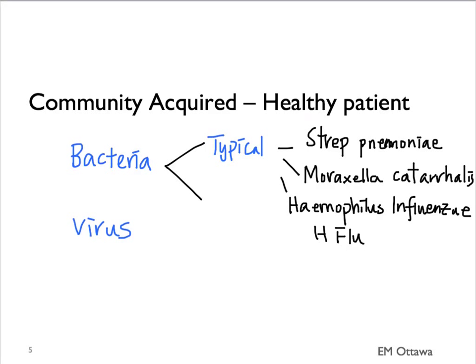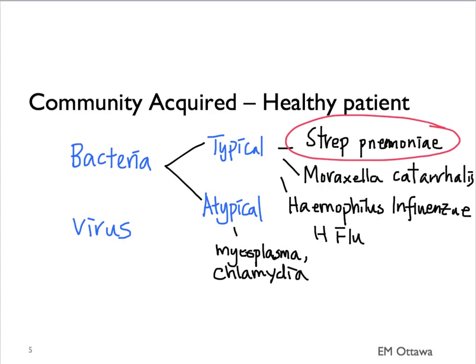Of the three typical bacteria, Strep pneumoniae is the most common cause of typical community-acquired pneumonia. In terms of atypical organisms, they can include Mycoplasma and Chlamydia. These organisms do not give the typical signs and symptoms of pneumonia. For viral infection, multiple viruses can cause pneumonia, including the influenza virus and RSV. Viral infections often come in epidemics, and patients infected by a viral pneumonia can also have bacterial pneumonia as well.